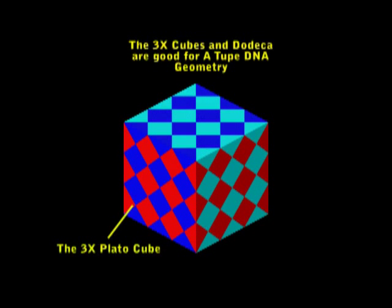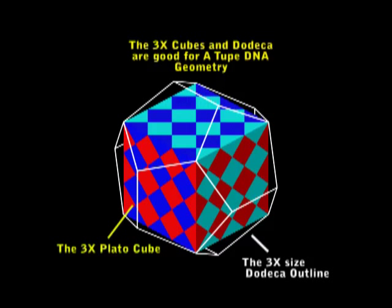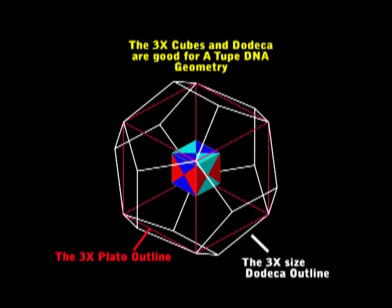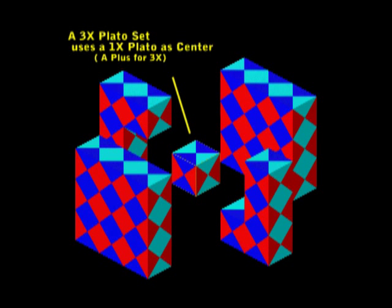When I worked on the DNA with the Dodecas, I found that this size cube was very important because that size gives us the DNA. Because it's a 3x Plato, it provides a solo Plato in the center of its own family.